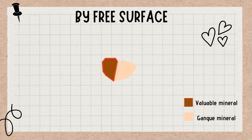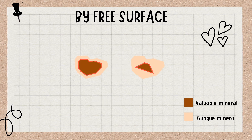For the next, 50% of the perimeter of the valuable mineral is exposed, so it is 50% free. And for the last one, the entire perimeter of the valuable mineral is enclosed by the gangue mineral, so it is 0% free, or not free at all.